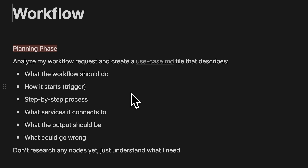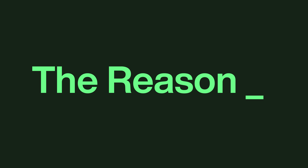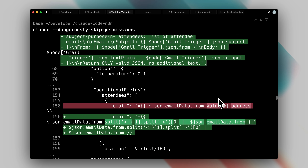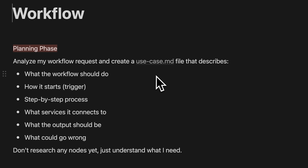While my earlier example was relatively straightforward, more complex workflows demand thorough planning from the start. At this stage, there's no need to dive into node research yet. Instead, the system brainstorms which tools and services your use case will require. Notice how you're not specifying particular services or nodes — that determination happens during the planning phase. MCP queries return massive amounts of data that can quickly overwhelm the context window, so by splitting the process into phases and saving each output to specific files, we maintain clarity and efficiency. The planning phase concludes by saving its output to a file called usecase.md.